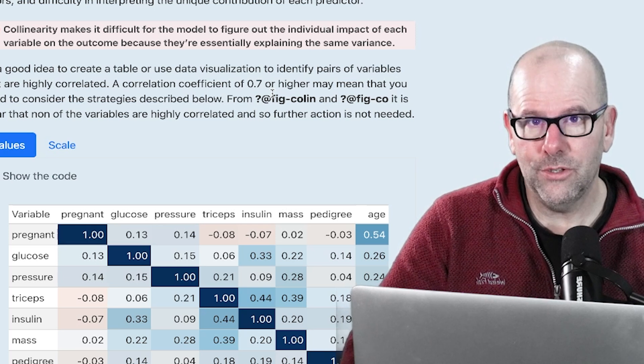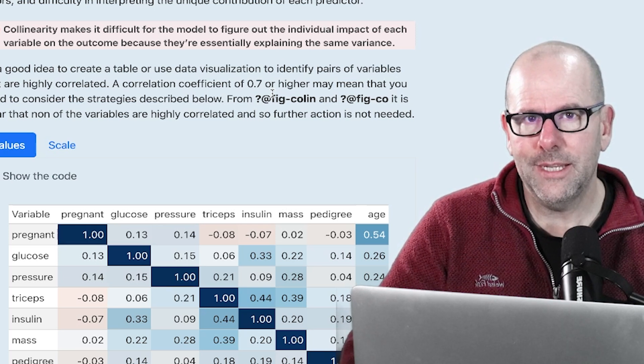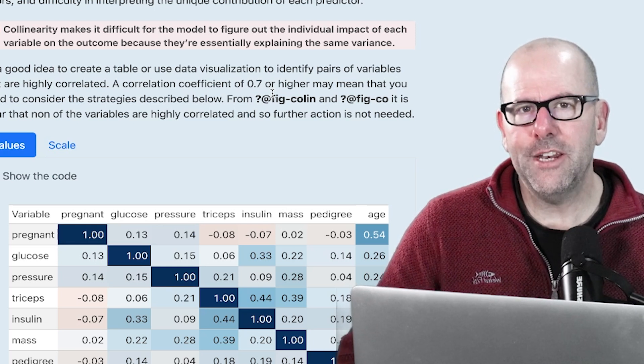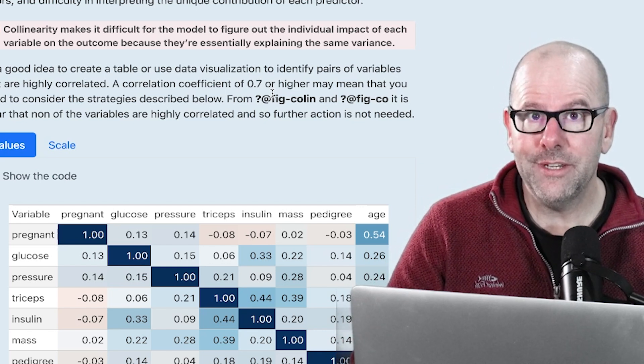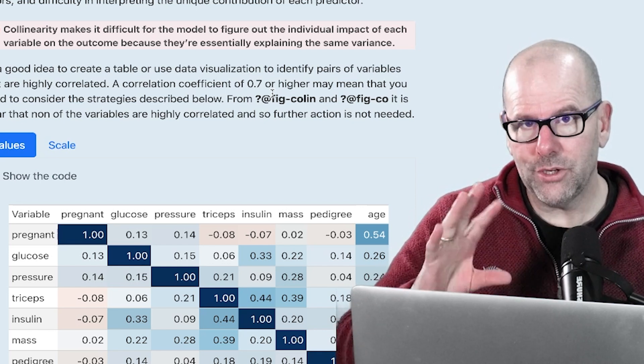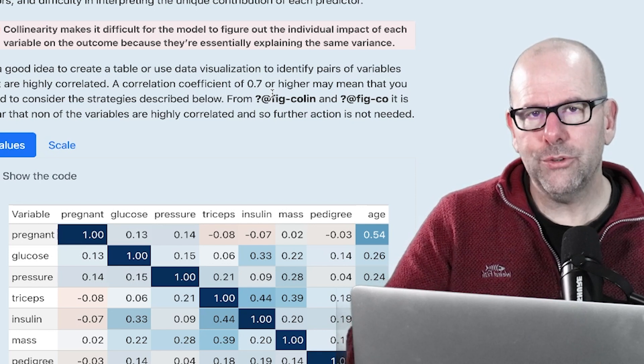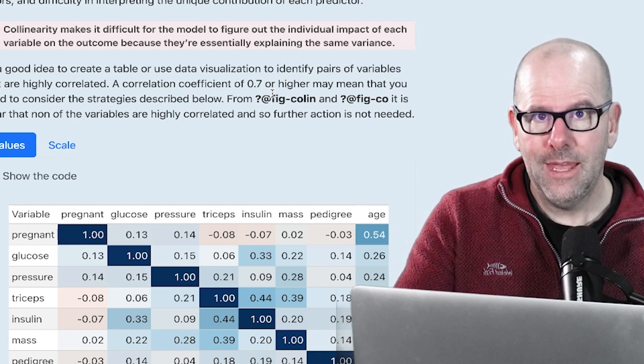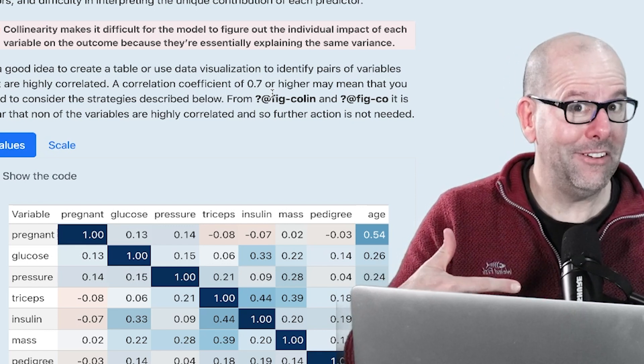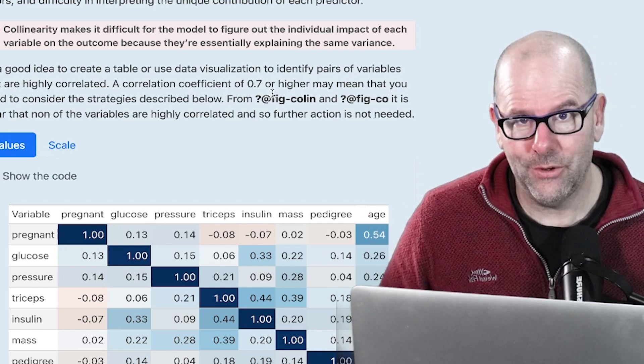There are a couple of strategies you can employ to deal with severe collinearity if you have it, but I'm not going to deal with that in this video. What we want to do in this video is identify whether or not there is a problem. In this particular dataset, I can tell you that there isn't a problem. But let's have a look at how we got there.